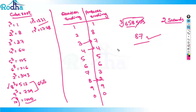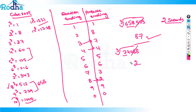Try this: cube root of 740088. It is ending with 8, so the answer will end with 2. Cut the last 3 digits. Remaining is 74. 74 falls between 4 cubed (64) and 5 cubed (125). Take the least, which is 4. So the answer is 42. This way you can find the cube root of any number.